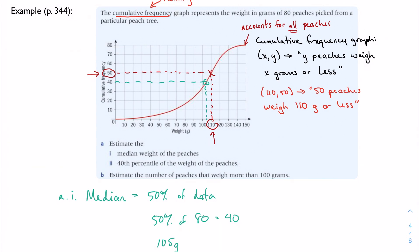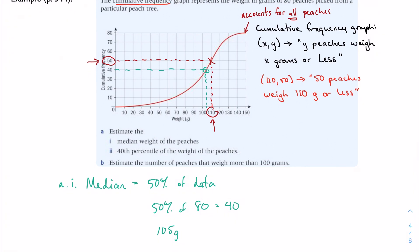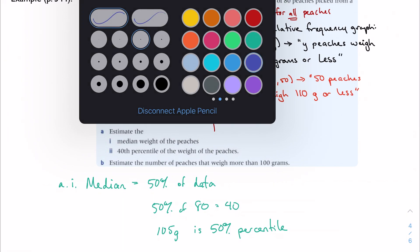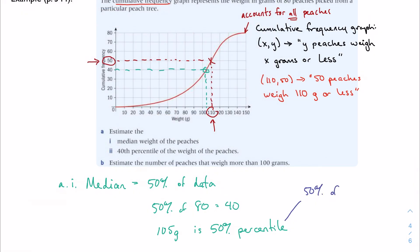That's the 50th percentile, or the median. So that's to say that 50% of the peaches weigh 105 grams or less. It's no different than if you've been to the doctor and they've talked about your percentile of height or weight. If you're in the 75th percentile of height, that means that 75% of the data is below you.